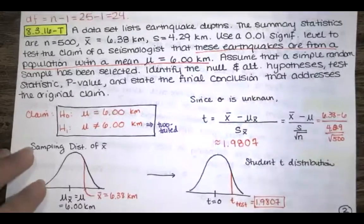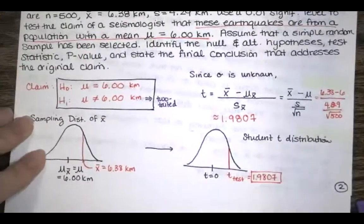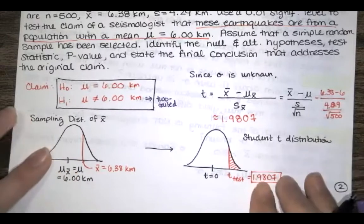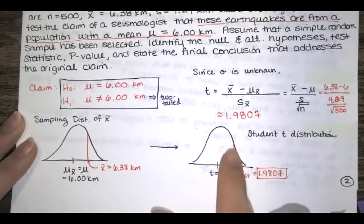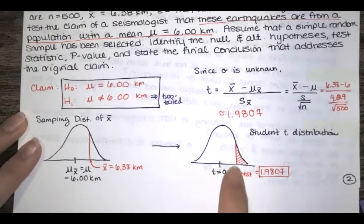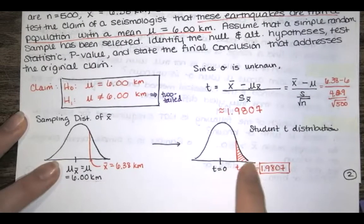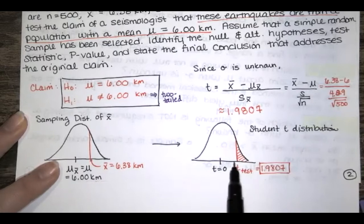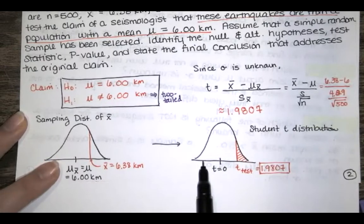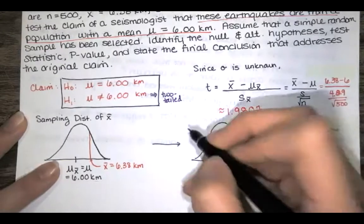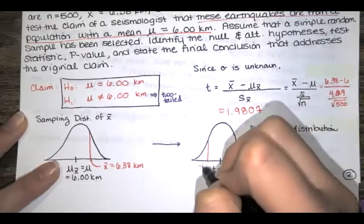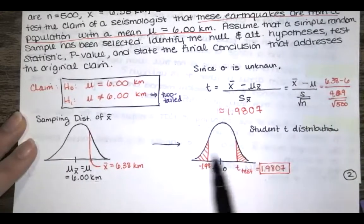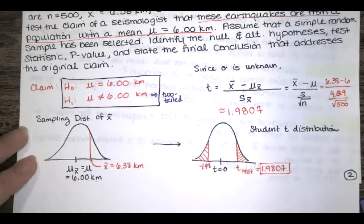For the P-value we want the area beyond the test statistic in both tails, doubled. Because it's a two-tailed test, we want the area from the test statistic T all the way out to the far right tail, plus the mirror image area at negative 1.98 out to the far left. So the P-value is this area times two.